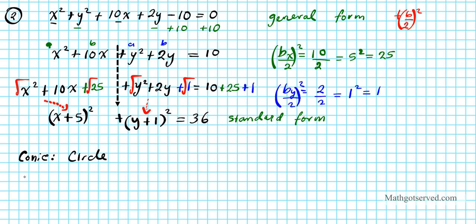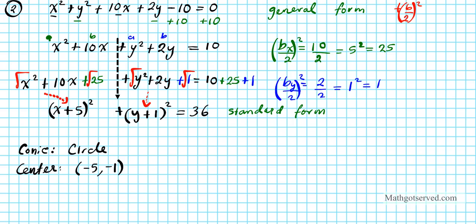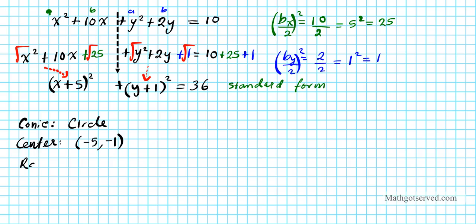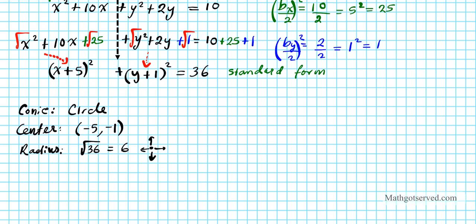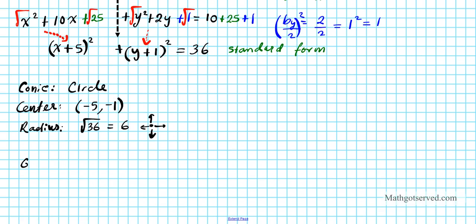Let's find the relevant components. The center is found by taking the opposite of the numbers next to each variable: x-world gives -5, y-world gives -1, so the center is (-5, -1). For the radius, take the square root of 36, which equals 6. This means we go 6 units in all directions from the center (-5, -1).